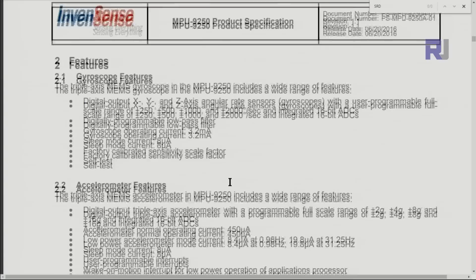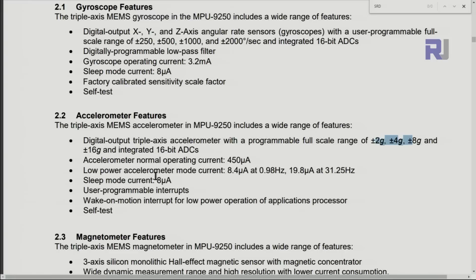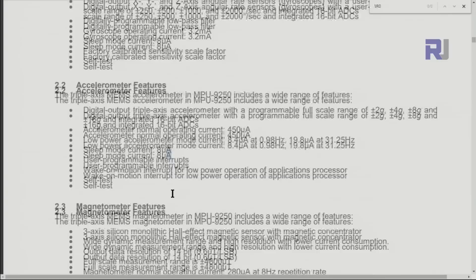Here are the values for gyroscope - degrees per second it can show you at that speed. The gyroscope current is 3.2 milliamps and in sleep mode is 8 microamps. For accelerometer these are the values that I mentioned. It's 8.4 microamps when at 0.98 Hertz, around 1 Hertz, and it increases significantly to 19.8 microamps at 31 Hertz. Normal operation is 450 microamps and when you go to sleep mode it's 8 microamps.